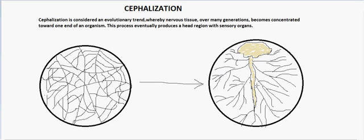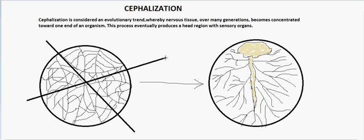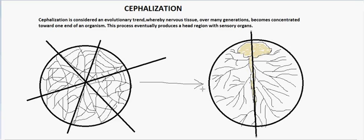The uncephalized organism can be divided into two equal halves through any plane passing through the center, because it is radially symmetric. But once cephalization occurs and a primitive brain forms, we can only divide it into two equal halves through one specific plane — not through another plane where one half contains the brain and the other does not.